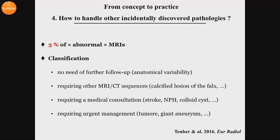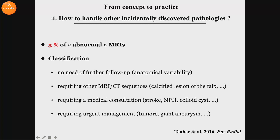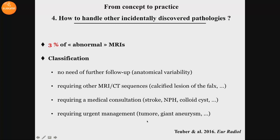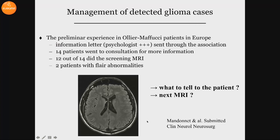How do we handle other incidentally discovered pathologies? Indeed, we know that the rate of abnormal MRIs in the general population is about 3%. But there are now some guidelines to handle these other discovered pathologies. In particular, there is a classification where you decide if the pathology doesn't need any further follow-up, if it requires another sequence, a medical consultation, or even urgent management. So we know how to handle what we will discover incidentally on the MRI.